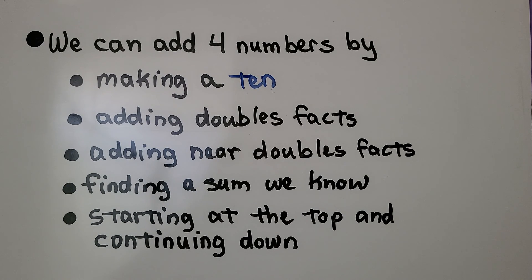We can add four numbers by making a 10, adding doubles facts, adding near doubles facts, finding a sum we know, or starting at the top and continuing down a column.